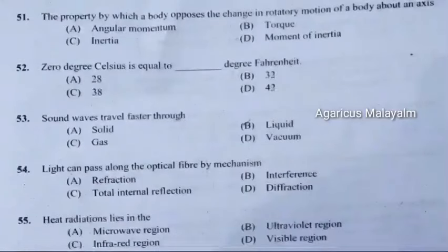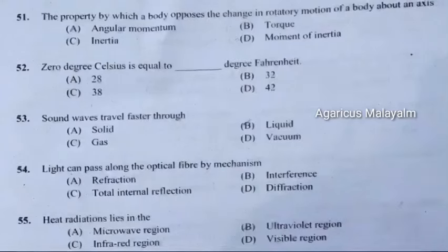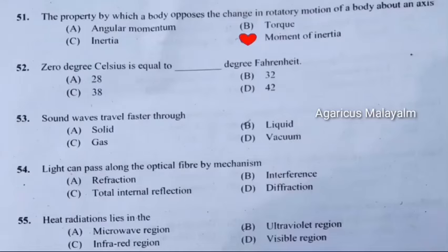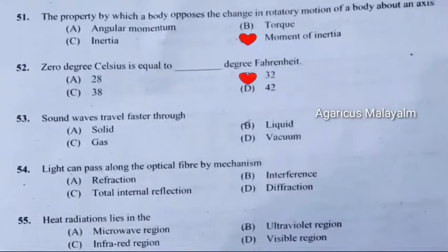Question 51: The property by which a body opposes the change in rotatory motion of the body about an axis. Correct answer is Option D: Moment of inertia. Question 52: 0 degree Celsius is equal to how many degrees Fahrenheit? Correct answer is Option B: 32.